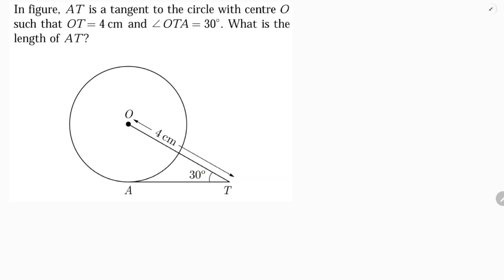We need to find AT. So here I will join OA. I know the angle between radius and tangent is 90 degrees. So angle OAT is 90 degrees because angle between radius and tangent is 90 degrees.